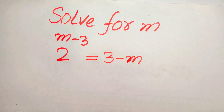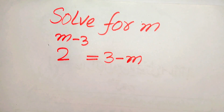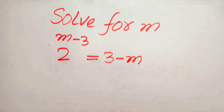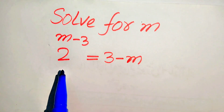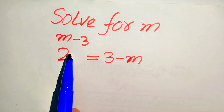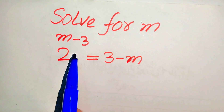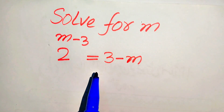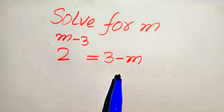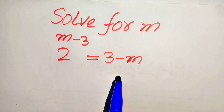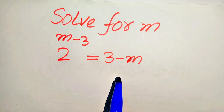Hello everyone. How to solve this problem for the values of m: if we have 2 to the power of m minus 3 is equals to 3 minus m, and we solve this problem for the values of m.